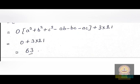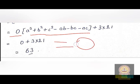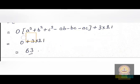Since a + b + c = 0, the entire first term becomes 0 multiplied by whatever is in the bracket, which equals 0. So a³ + b³ + c³ = 0 + 3·abc = 3 × 21 = 63. Therefore, the answer to this question is 63.